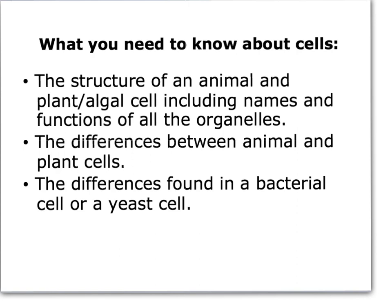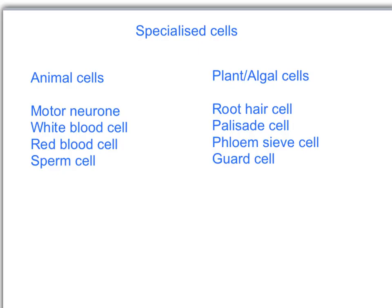So if we look at this, this is literally just a summary of what you're going to be expected to know. Structures of animal and plant, including algal cells. Remember that algae and plants will have similar cell structures. So things like seaweed and pondweed will have similar cells to plants. And you need to know the names and the functions of all those organelles. You need to know the differences between animal and plant cells and the differences found in bacterial cells and yeast cells.